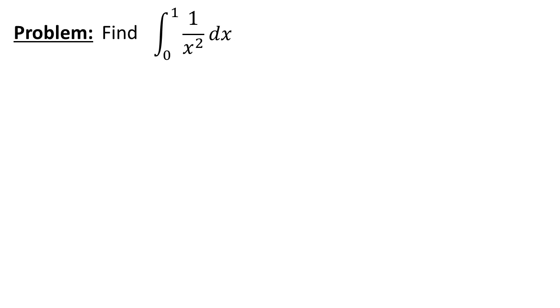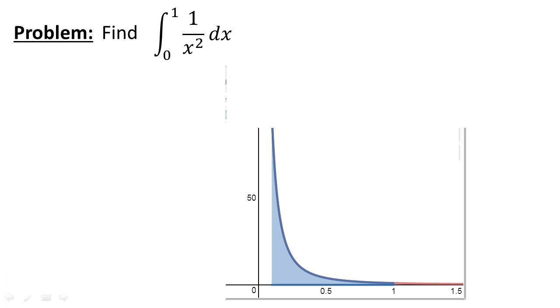Consider the integral 1 over x squared dx from 0 to 1. Now this might not seem like that crazy of an integral, but let's look at what we're really trying to find here graphically. From our Desmos plot you can see that if we wanted to find the area in blue here, that's not going to be too bad in this case.